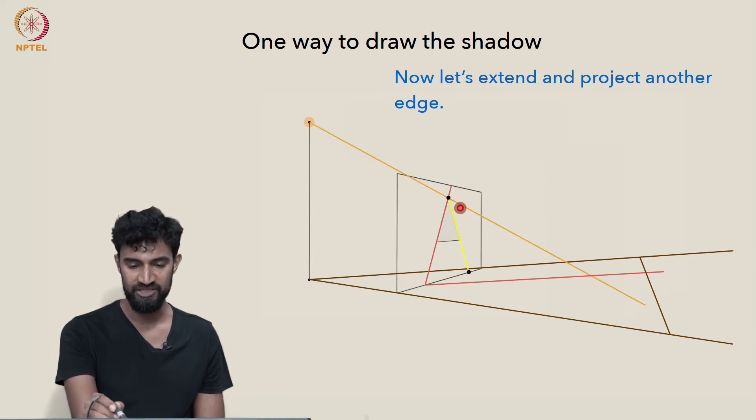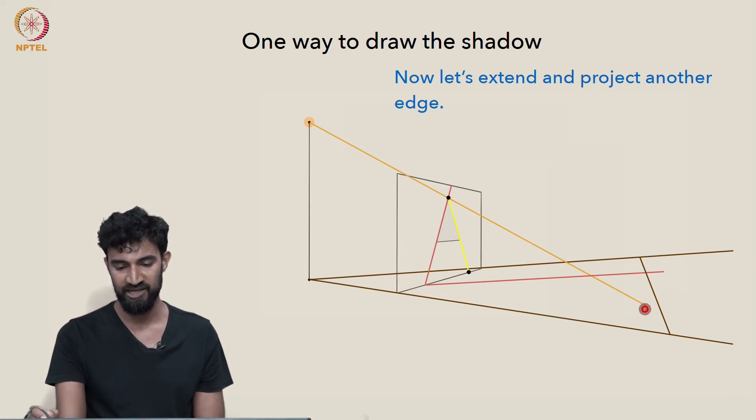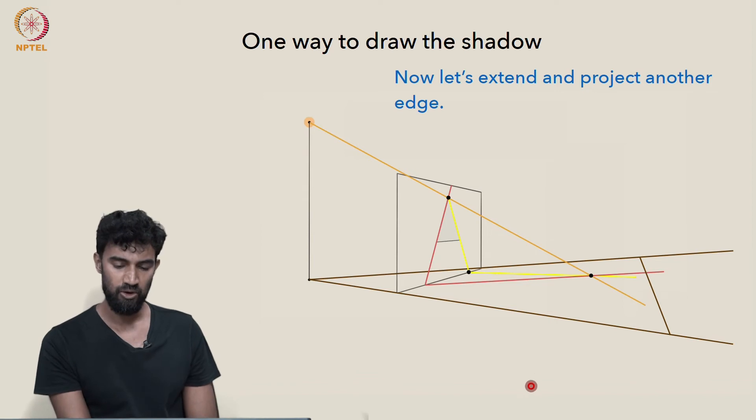Where does the top point project to? Well, where does this ray of light hit the ground plane? We know that this yellow edge intersects this red edge. So its shadow intersects the red shadow. So its shadow is right there. So, connecting those, we get our yellow shadow. Okay. Now there's only one edge left.